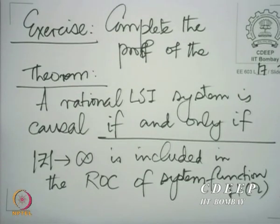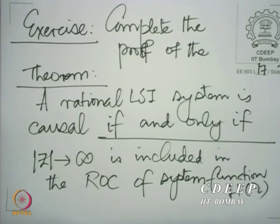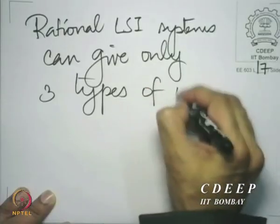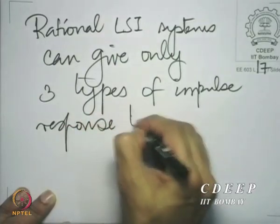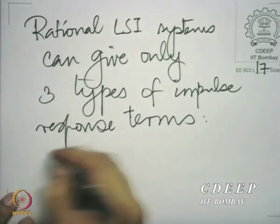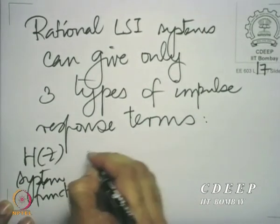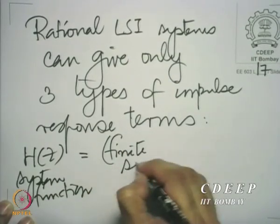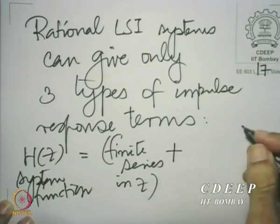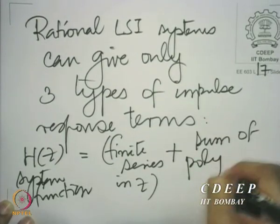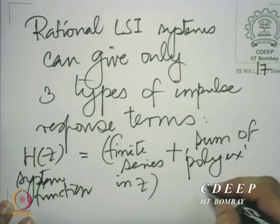Now we ask the question in the context of stability. For stability, if you have rational systems, we have seen immediately what kind of impulse response to expect. Rational systems have become very predictable. There are essentially three types of terms that can come out of rational systems: a finite series in z or z-inverse, plus a sum of poly-x unilocated pole terms.